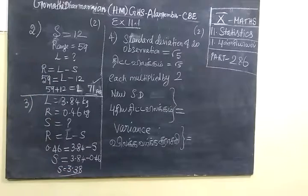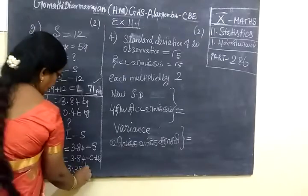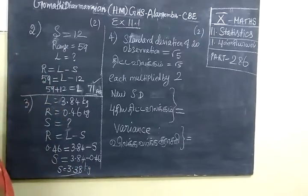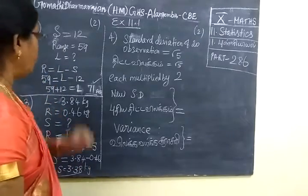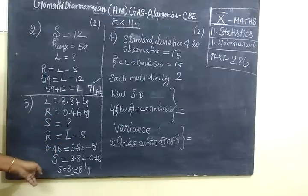So the answer is S equals 3.38. Take the square root — this is the value. Next, you are finding. This is just one minus.